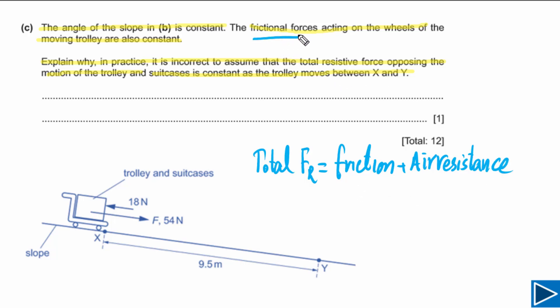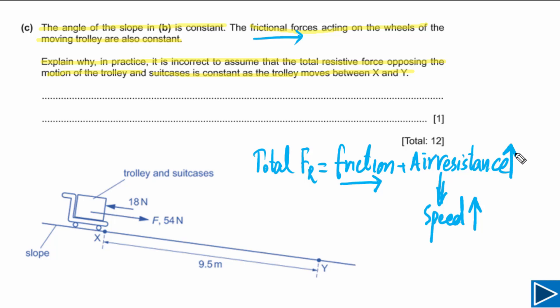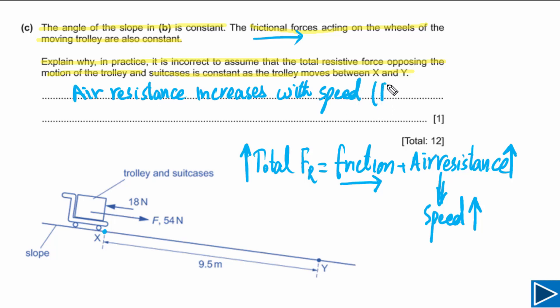Friction is constant as given, but air resistance depends on speed. As the trolley accelerates down the slope between X and Y, its speed increases, so air resistance also increases. Therefore the total resistive force is not constant — it increases as the trolley moves from X to Y. This question has one mark (a B mark) for stating that air resistance increases with speed.